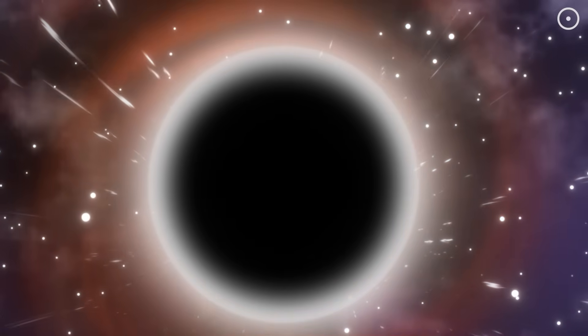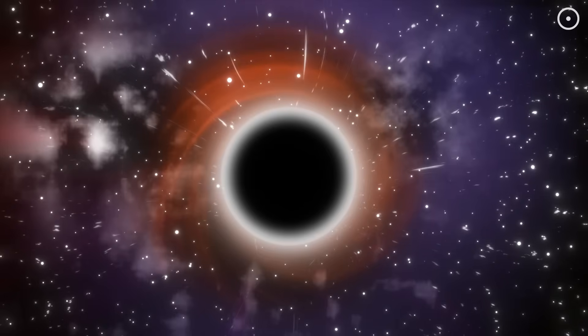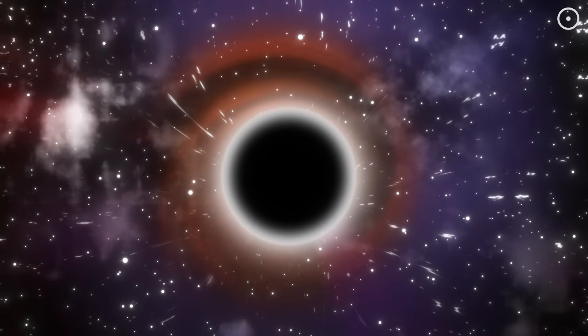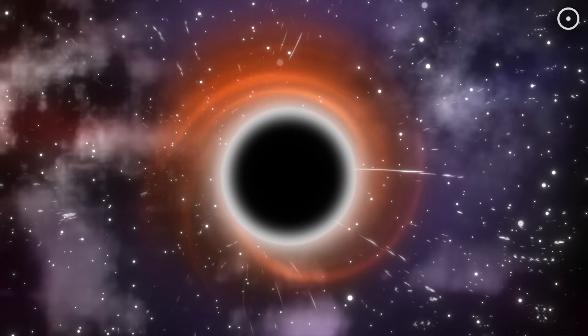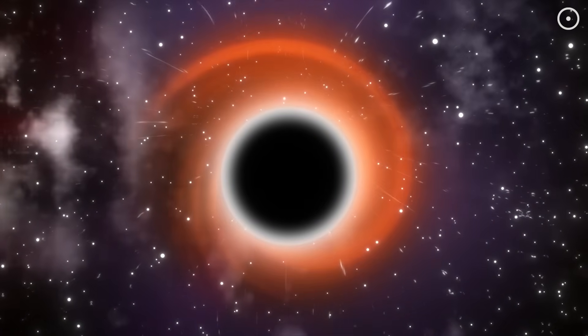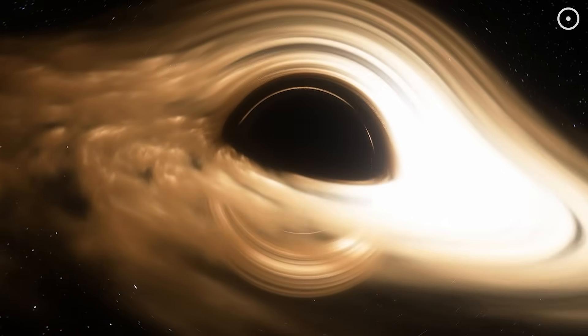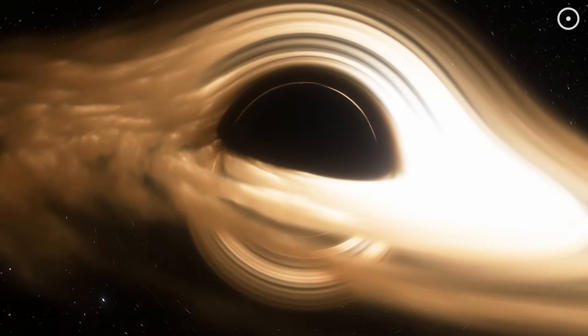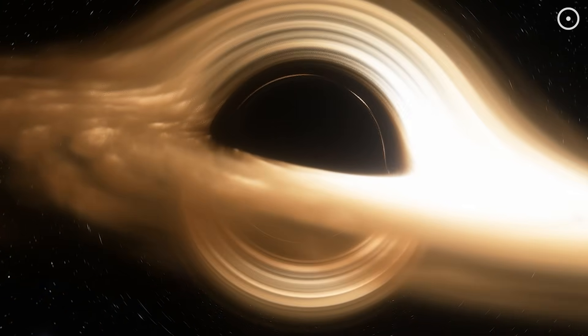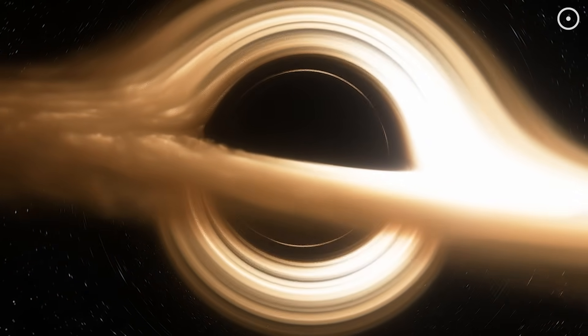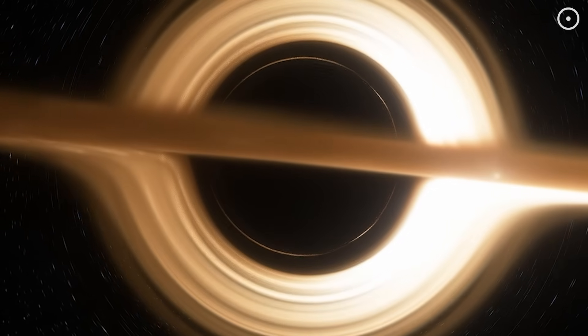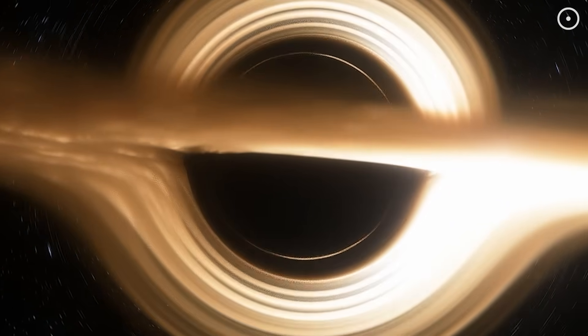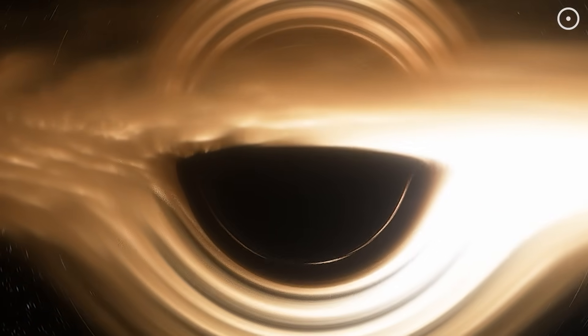But recent theories suggest that might not be the whole story. Some physicists think black holes could retain traces of the information from the stars, gas, or even light they've devoured, like leaving behind fingerprints in the fabric of spacetime. Why does this matter? If true, it could solve a major puzzle called the information paradox, a mystery about what happens to information when it falls into a black hole. It's still being debated, but the idea of black holes having hair completely changes how we think about these cosmic giants. And that's just the start.